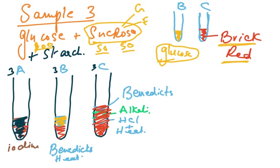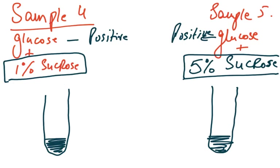Samples 4 and 5 are the most critical. Both contain glucose, but one has 1% sucrose and the other has 5% sucrose. When you first perform the Benedict's test on both samples 4 and 5, both will give a positive result — for example, a green shade — because glucose is present in both.